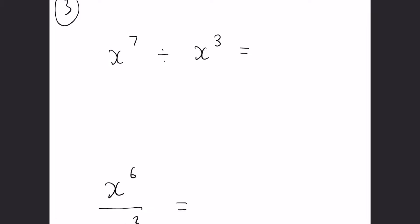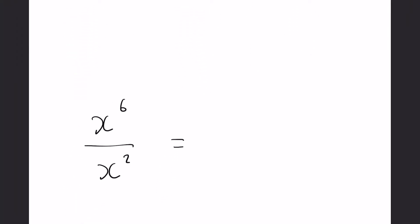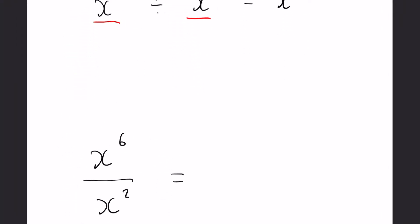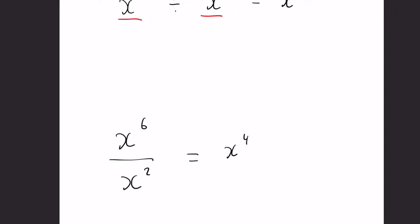Okay rule number three, x to the seven divided by x to the three. Now if when we times them they add together, you might be able to guess what happens when they get divided. So x to the seven divided by x to the three, again we have the same base, so the rule is okay seven take away three, we're going to get x to the power of four. Now another way of writing this which is often quite common is as a fraction and that means the same as what the divide sign means, so it's just x to the six divided by x to the two and coincidentally that is going to give us x to the four as well.